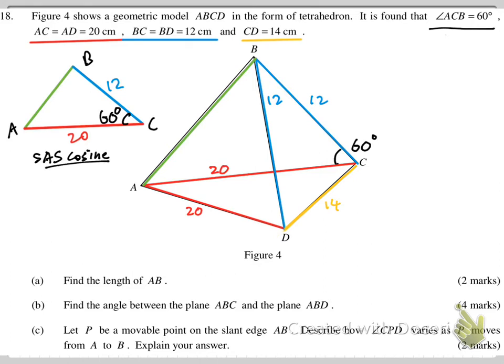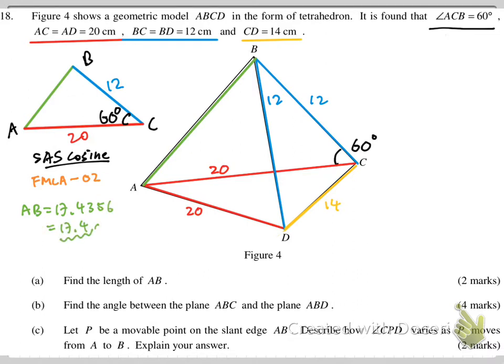On your calculator it is formula 02. You input 12, 20, and 60, and immediately you have the answer. AB will be 17.4 cm. I will leave more decimal places for better accuracy for the intermediate result. The final answer is rounded to three significant figures — it is 17.4.